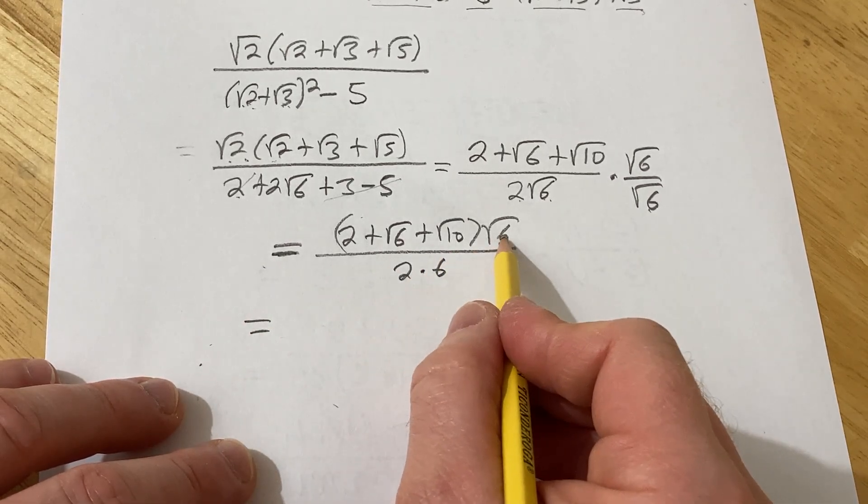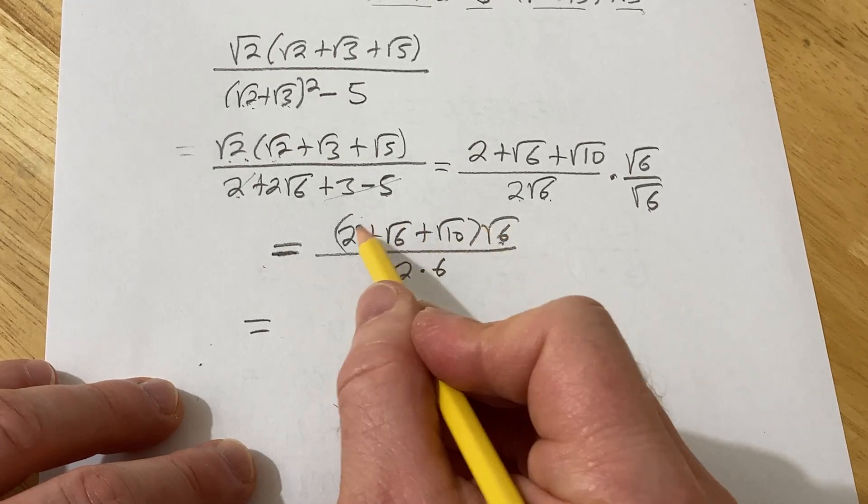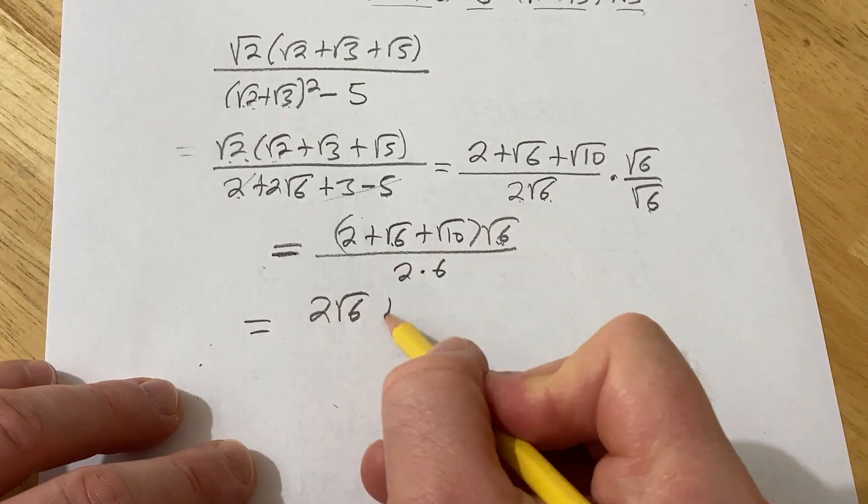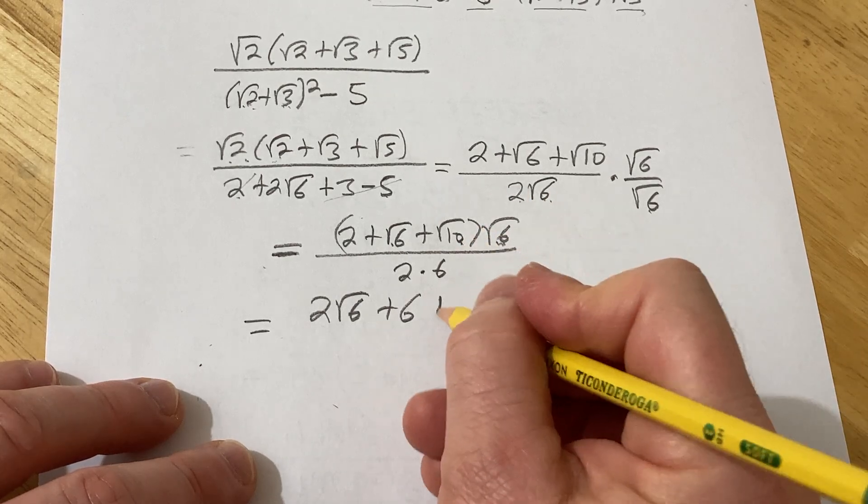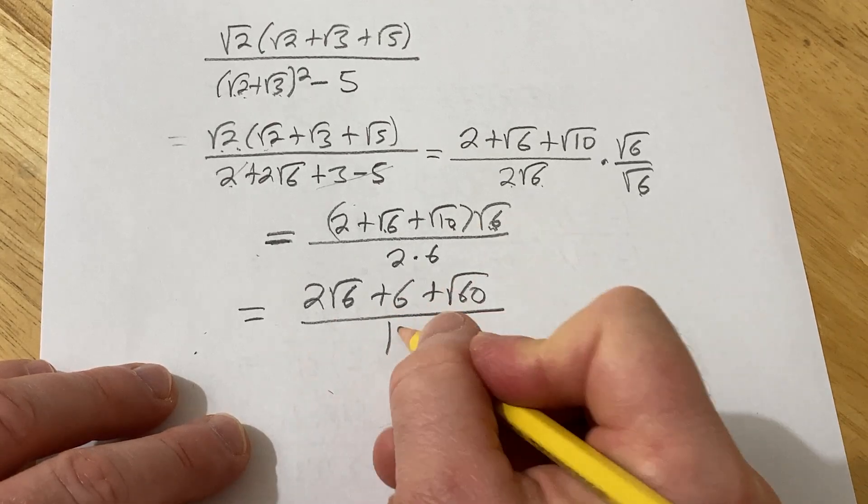So I guess let's go ahead and distribute. So this will be, let's see, the square root of 6 times 2 is 2 square root of 6. The square root of 6 times the square root of 6 is 6. And the square root of 6 times 10 is the square root of 60. Okay, that's the square root of 60 over 12.